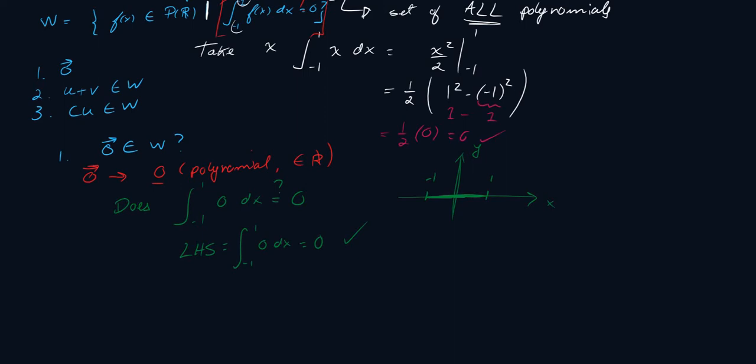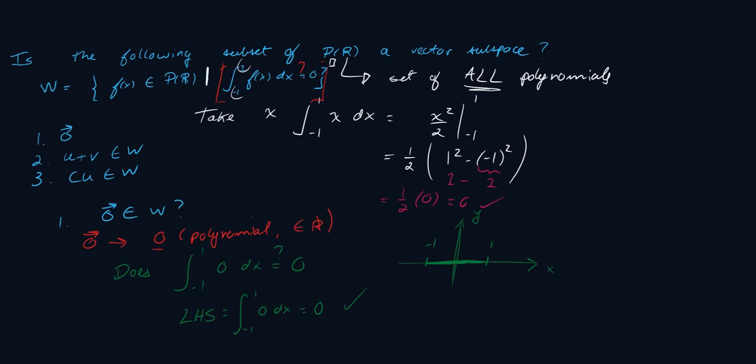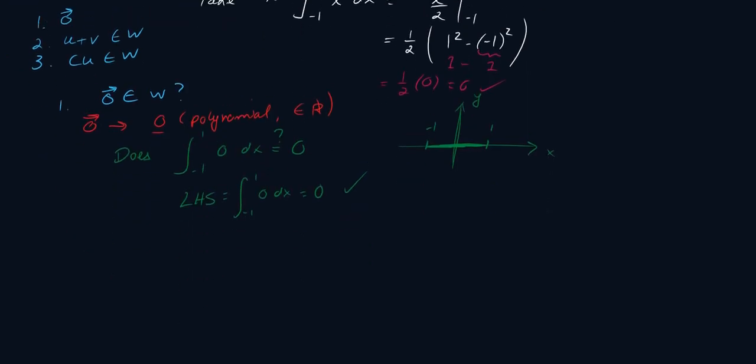This just requires a tiny bit of calculus. You'll likely see some easy calculus in linear algebra because all mathematics are related, so don't be surprised if you see this in practice problems. That was the zero vector — now let's do closure under addition.